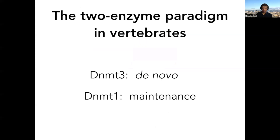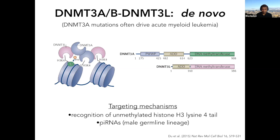Despite the fact that DNA methylation doesn't necessarily explain developmental gene regulation, the two-enzyme paradigm has really held up well in vertebrates. DNMT3 is the de novo enzyme and DNMT1 is the maintenance enzyme — though it's actually more complicated, with DNMT3A and DNMT3B acting as heterotetramers with a pseudoenzyme called DNMT3L.